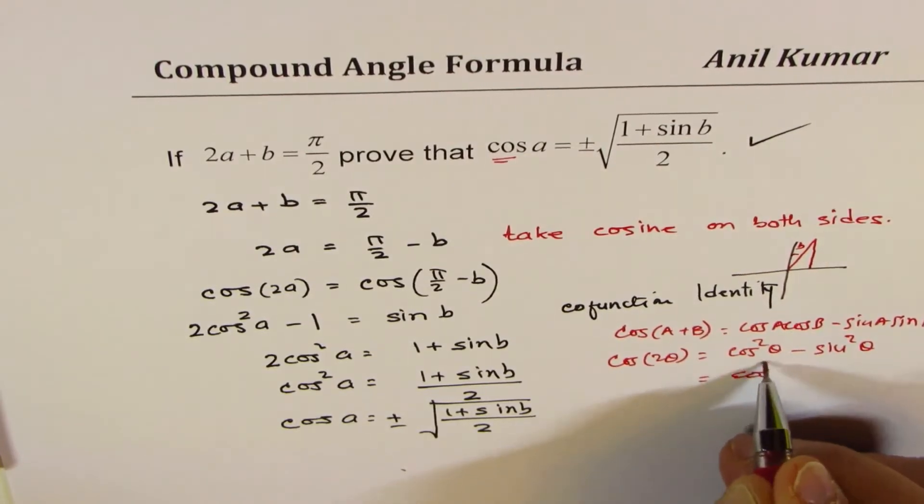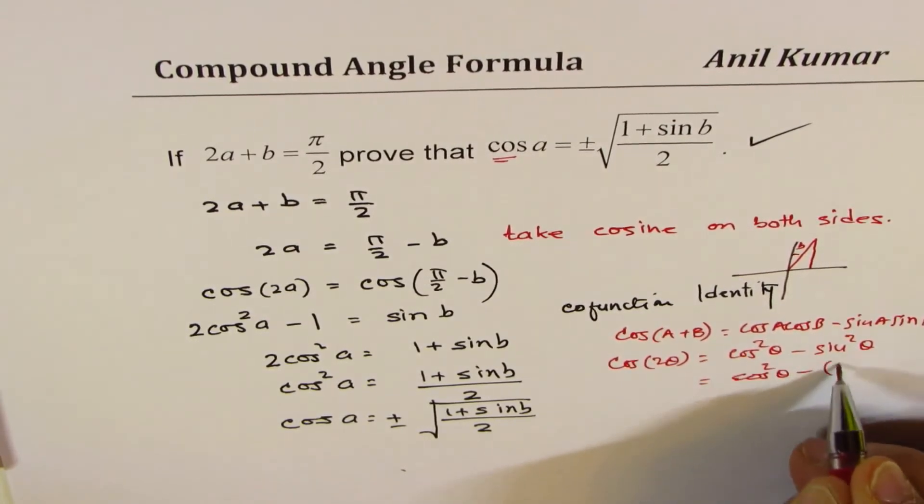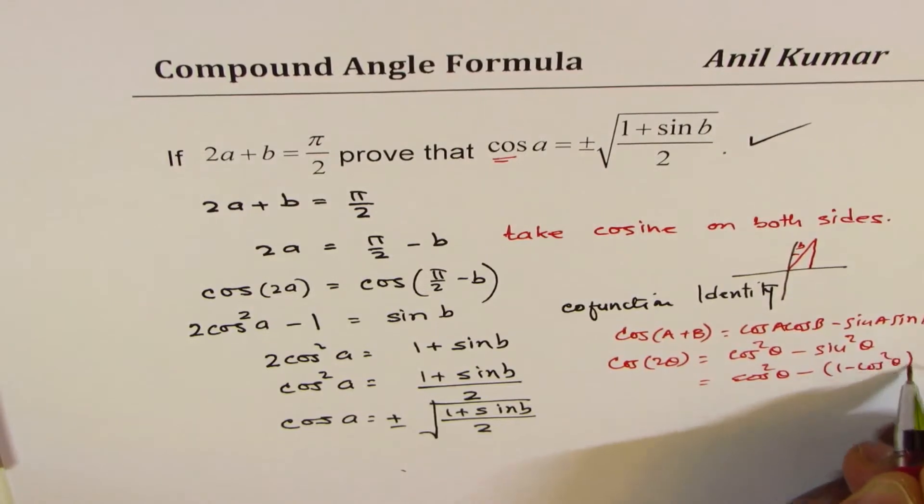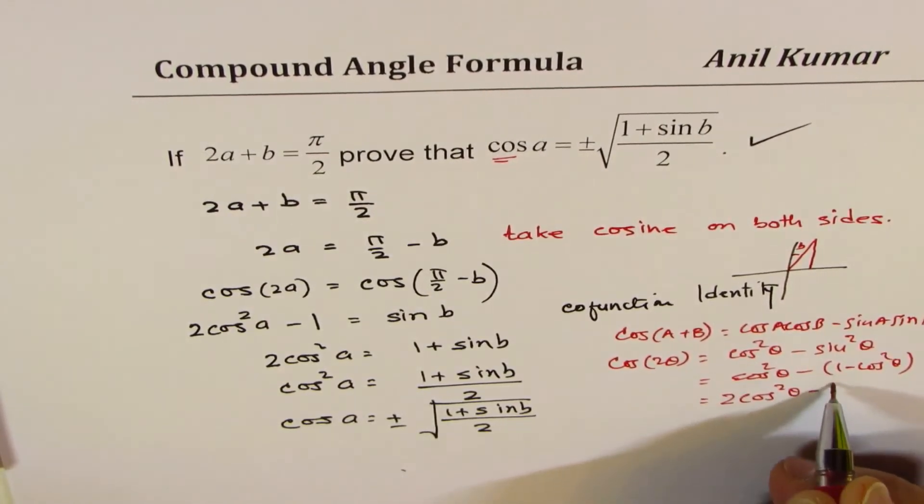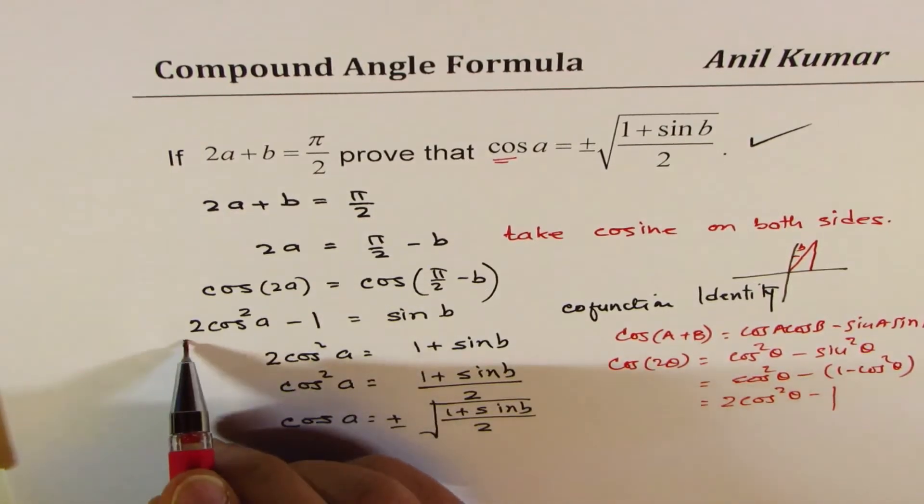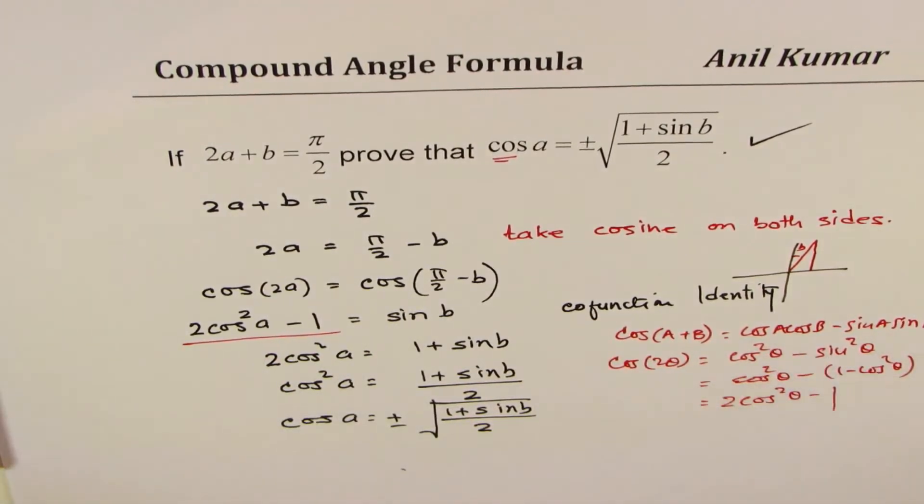And writing sin square theta as 1 minus cos square theta, you get 2 cos square theta minus 1, which we have right here. So I just derived this for some of you who might have got lost at this stage.